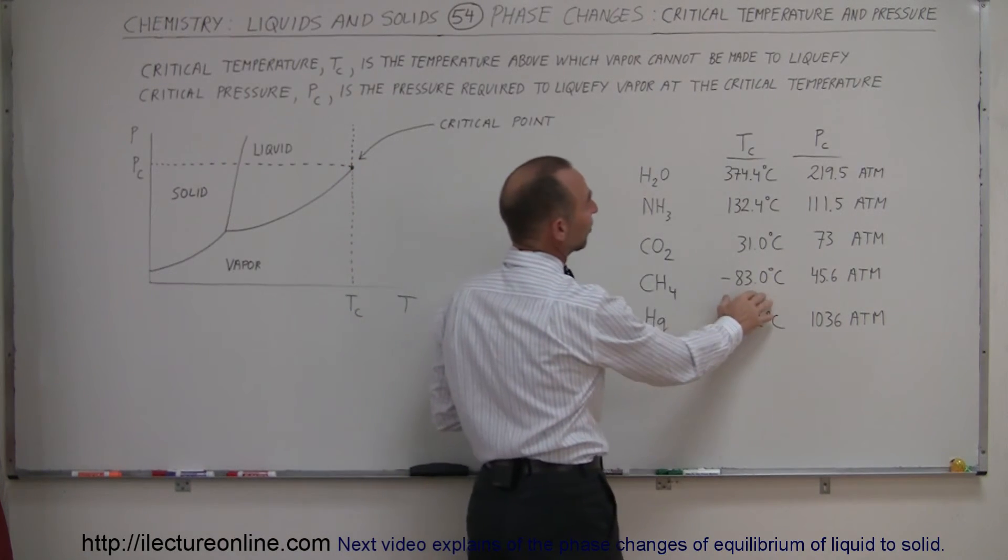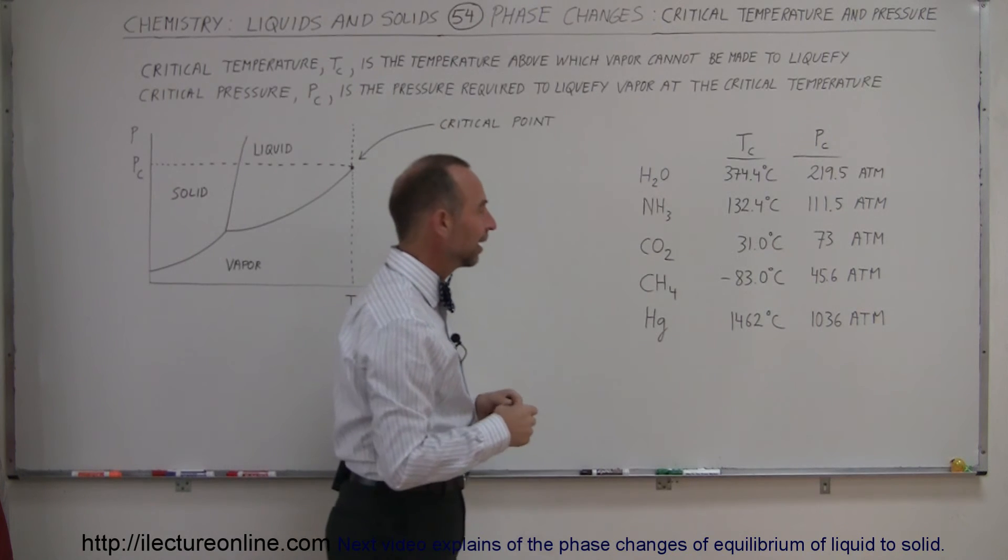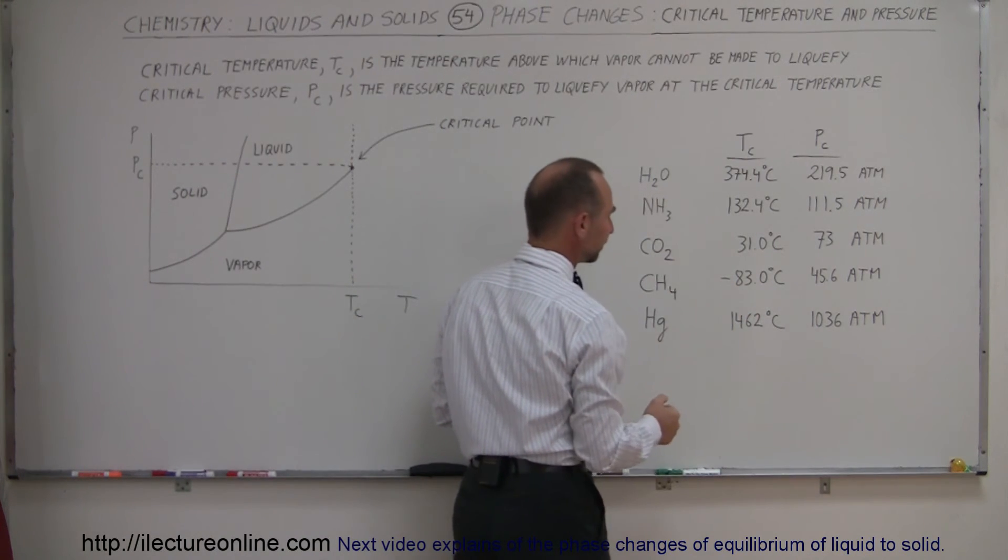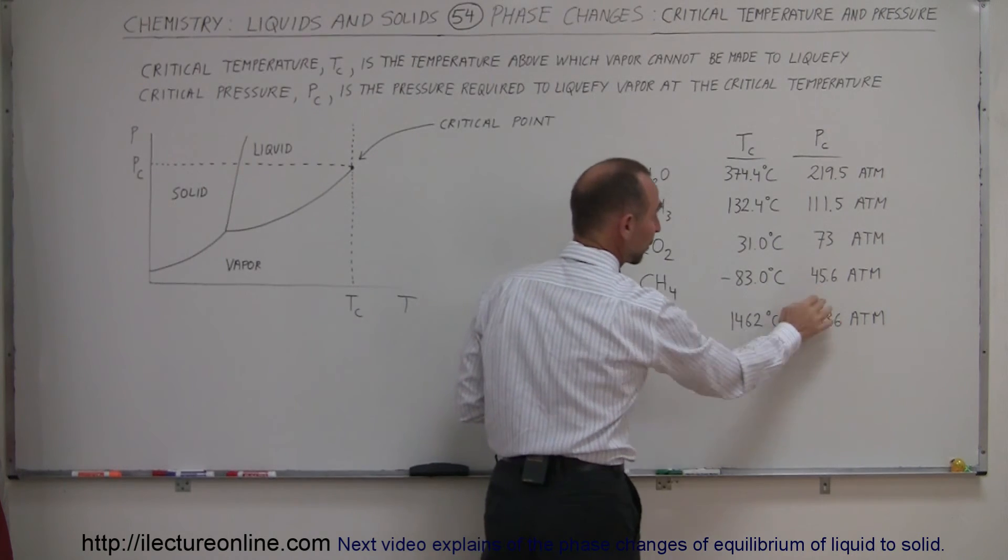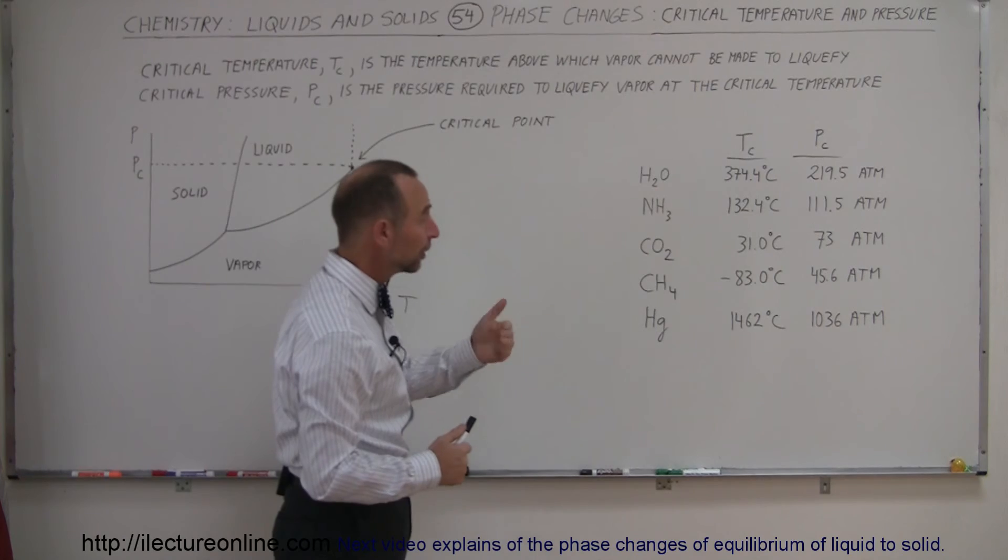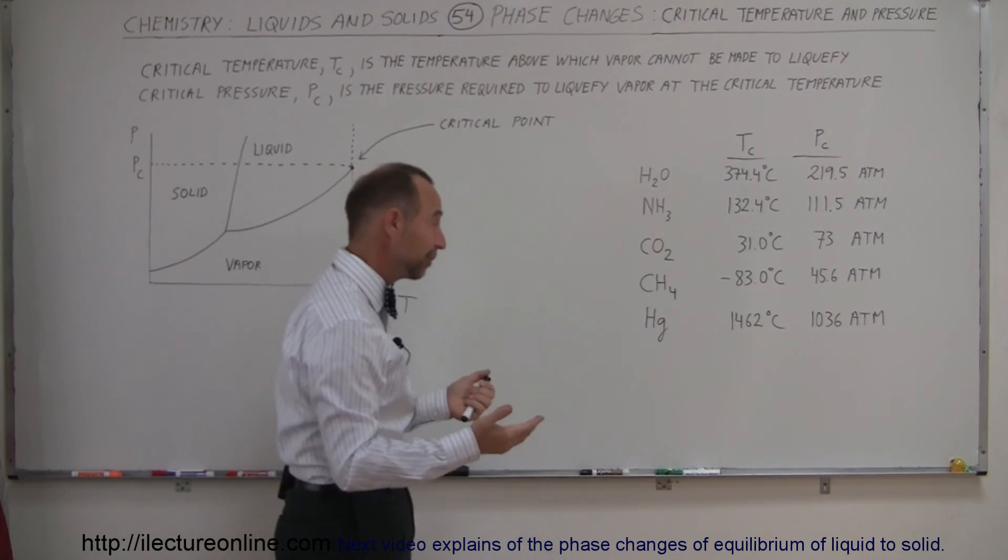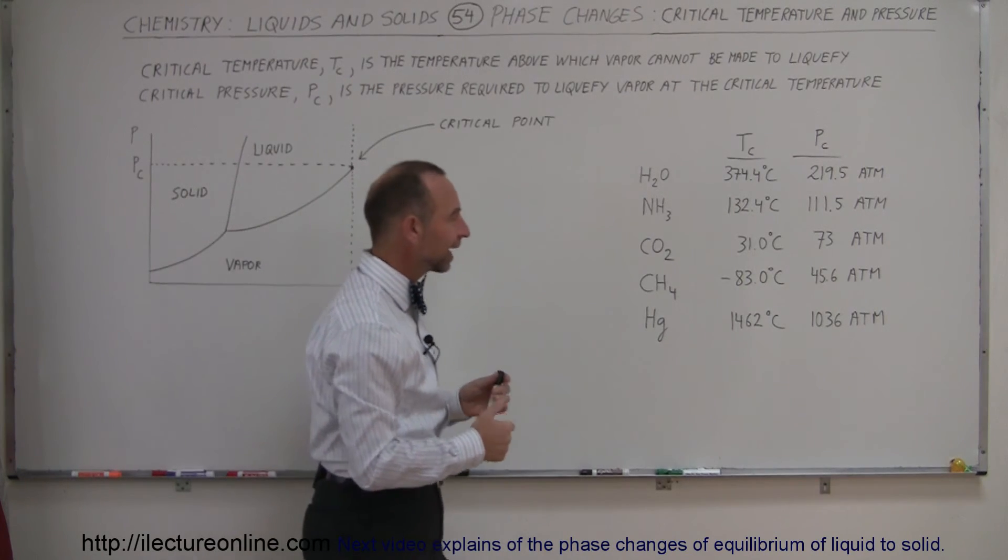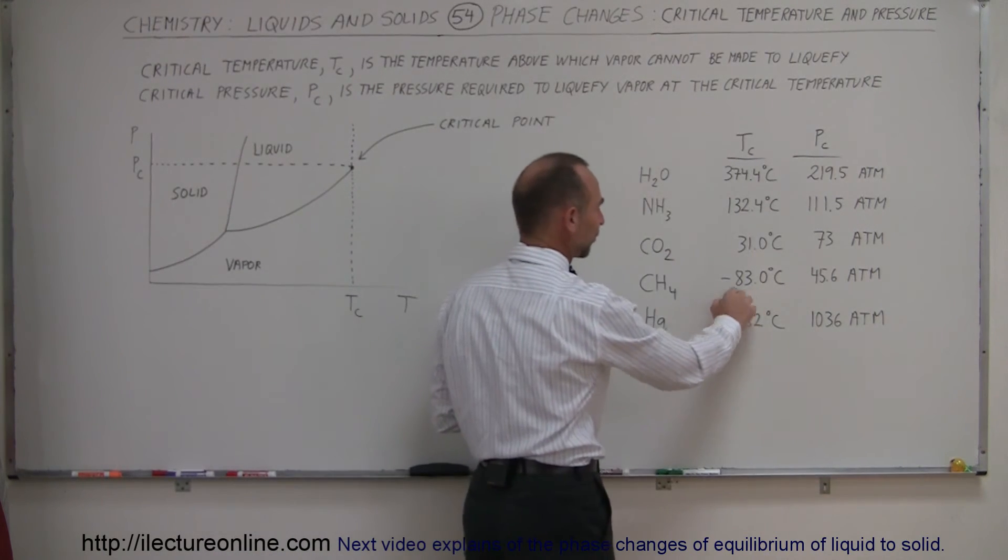Methane, minus 83. Of course, there's not a lot of intermolecular forces on methane, and so the critical temperature is fairly low. At this temperature, you would require a lot of pressure, 45.6 atmospheres, to turn methane into a liquid at minus 83 degrees centigrade. So you can imagine that methane is not likely to turn into a liquid unless the temperature is very low.